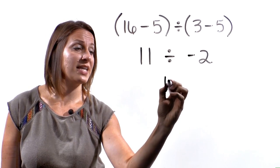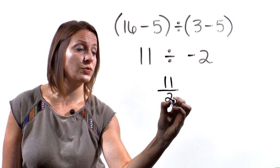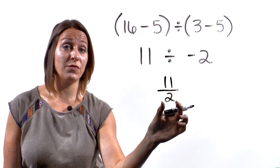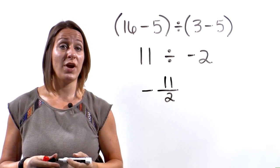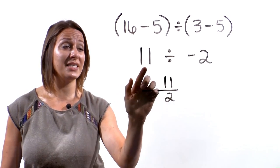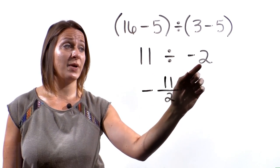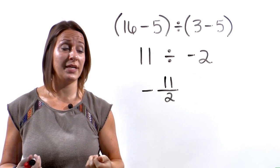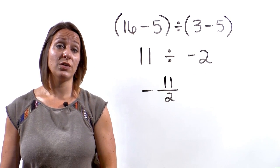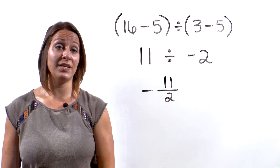Now since we're not working with calculators, the only way we can simplify this, 11 divided by negative 2 is to write it in a fraction form. So we'll have 11 over 2 and that negative sign from the 2, we'll just put that out front, making the entire fraction a negative. Because a positive 11 divided by a negative 2 makes the whole problem, or the whole value negative. So for this answer, we'll leave it as negative 11 over 2.